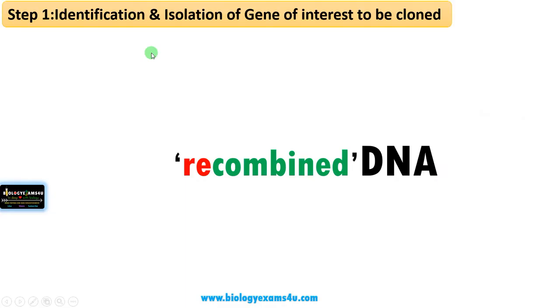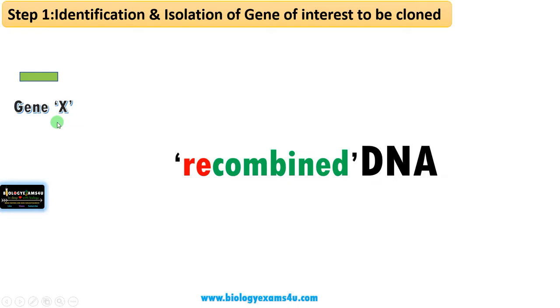Step 1: Identification and isolation of the gene of interest to be cloned. First we need to find out the gene of interest. Suppose this is the gene of interest — gene X — isolated from humans.